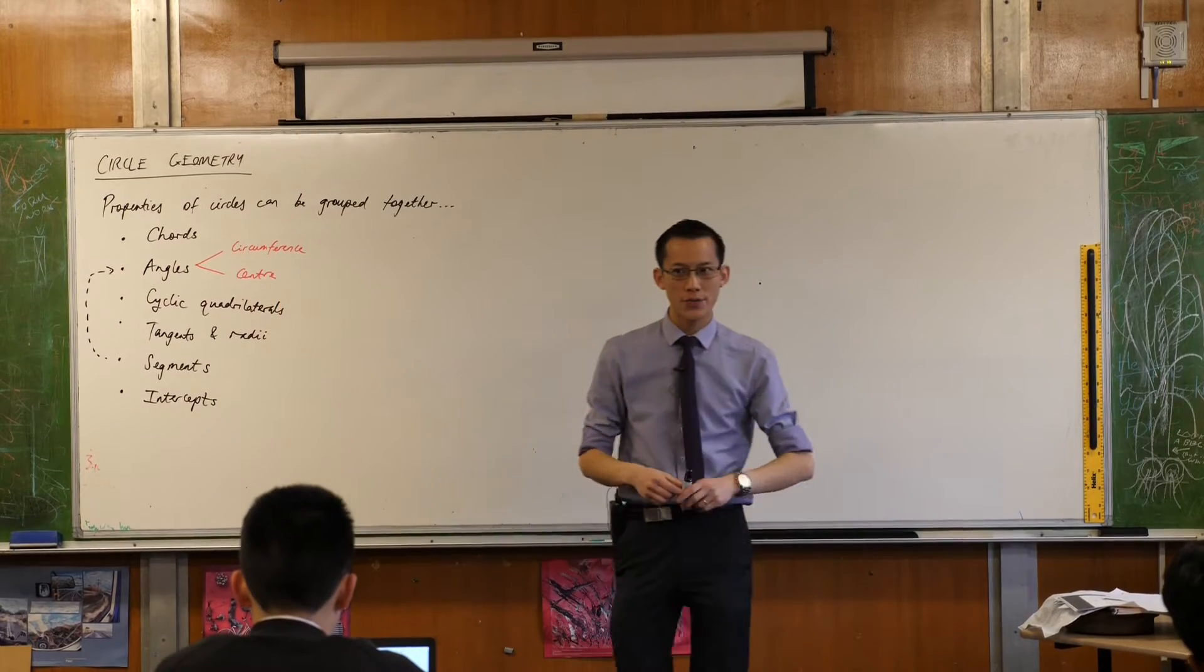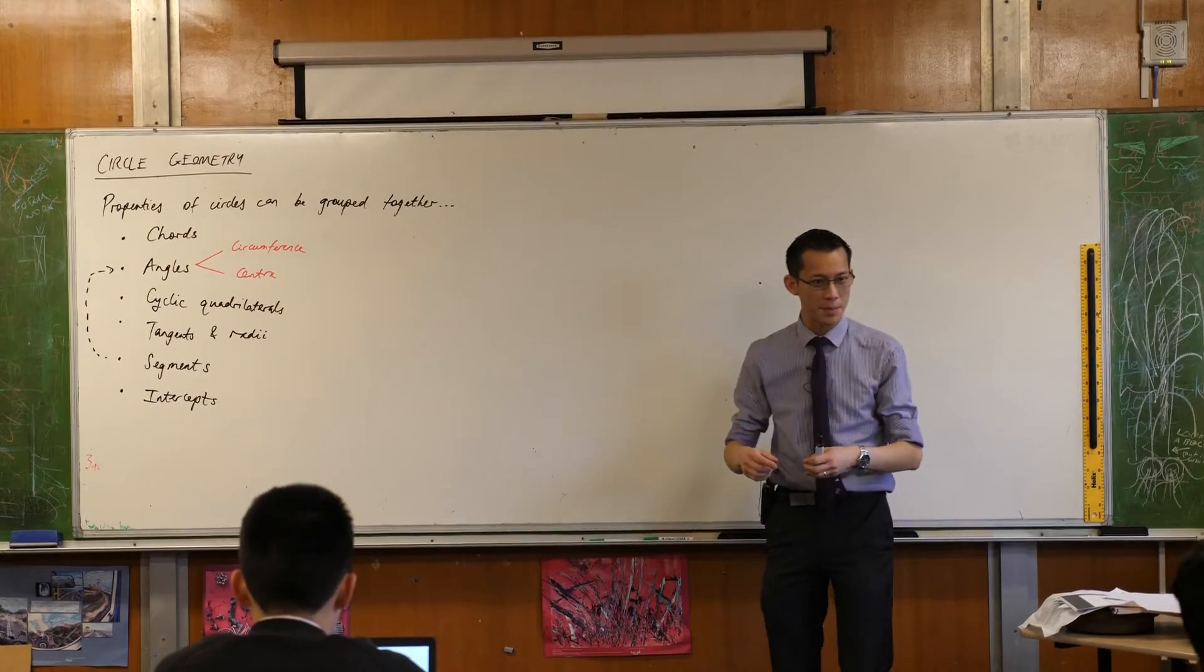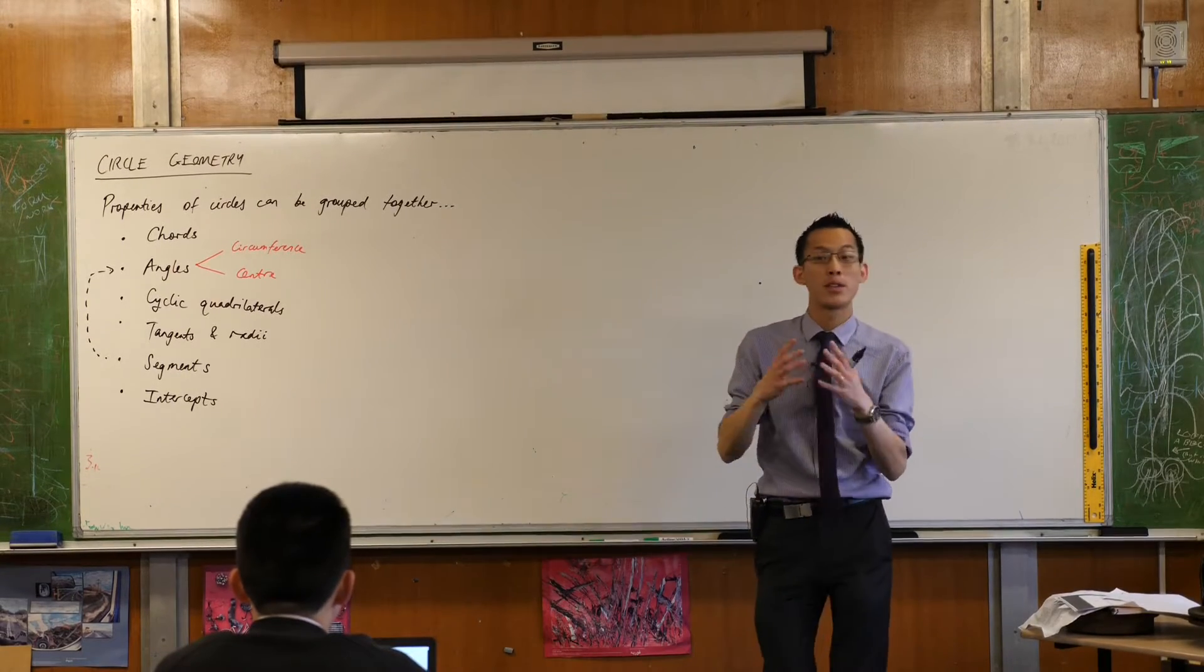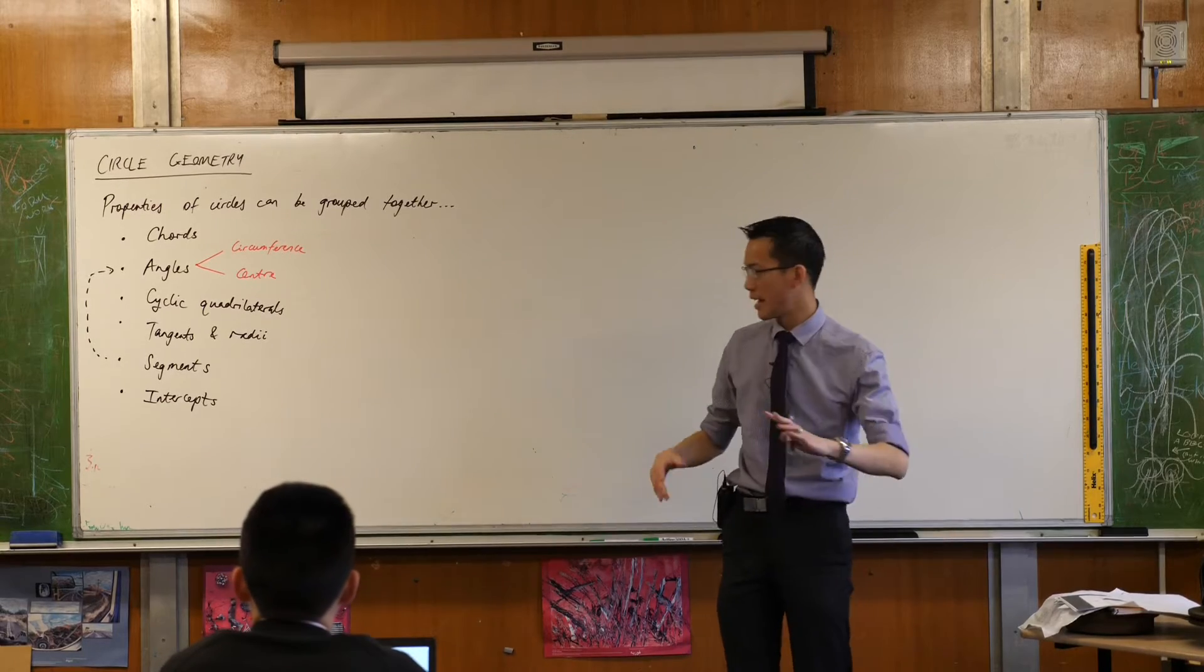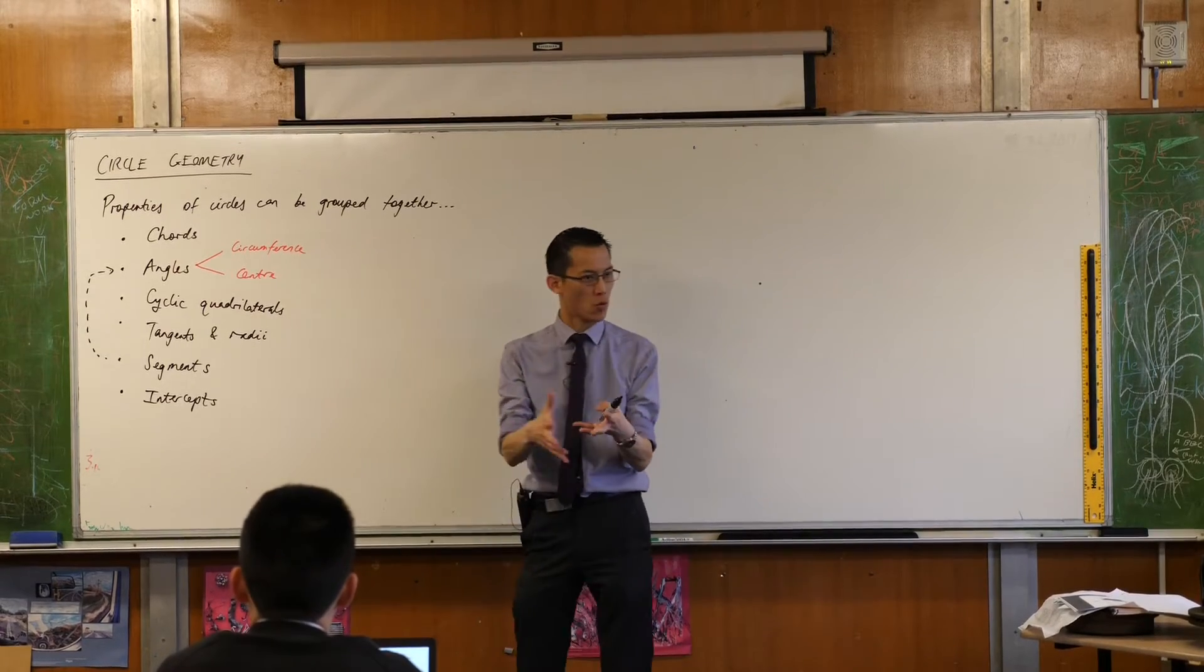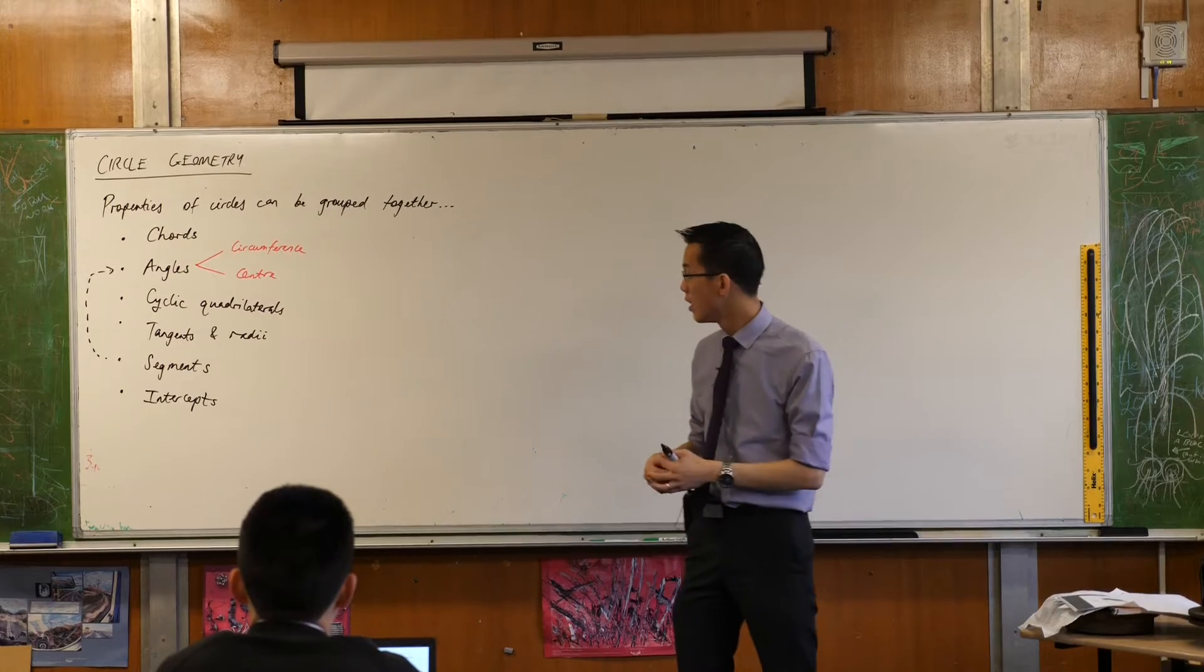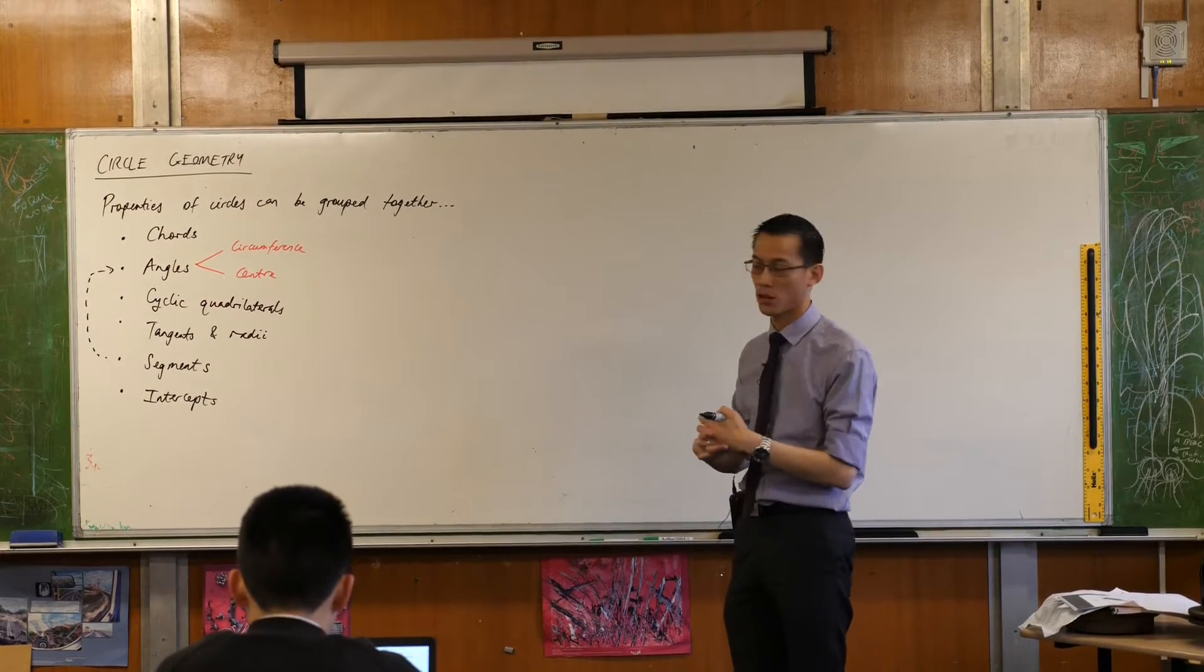And the last major category that we have a look at is intercepts. You might recall from last Friday we thought about intercepts. Intercepts are parts of intervals when we're talking about plane geometry rather than the Cartesian plane. Intercepts don't refer to x and y. We're talking about parts of lines, parts of intervals on a circle.